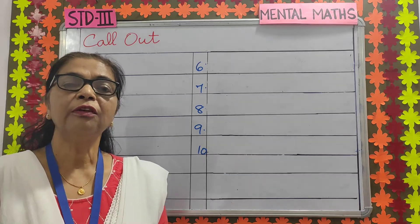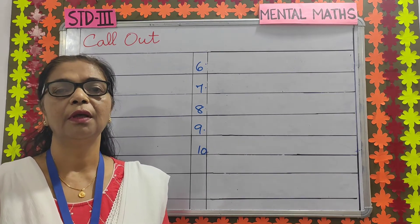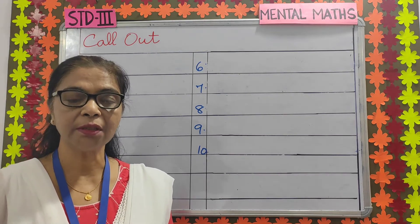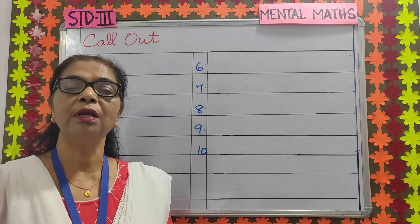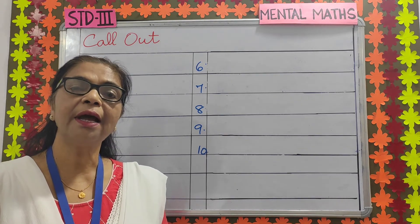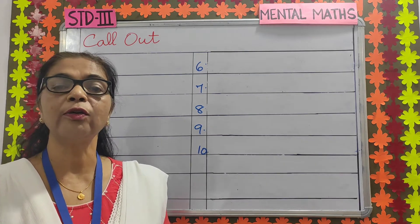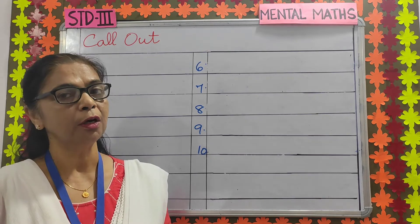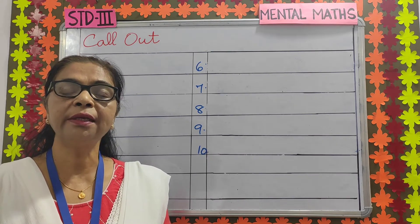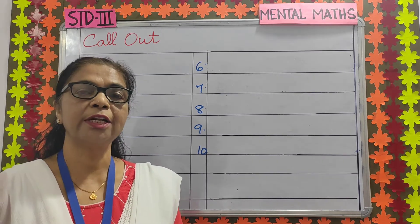Now children, we are going to practice the called-out questions. The teacher will call out the questions three times. The first time, you will listen carefully. The second time, you will write the answer. And the third time, you will check your answer. Write only the answer in your copy, and make sure you write the answer in the correct column. Let's start.